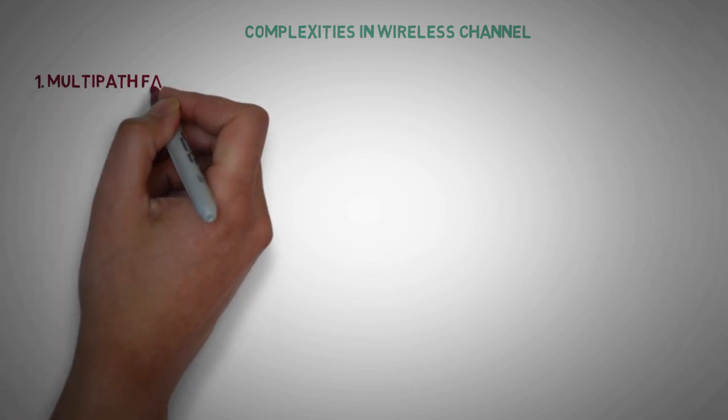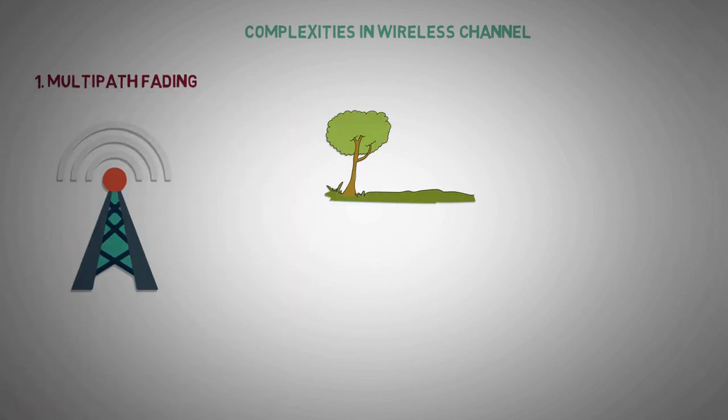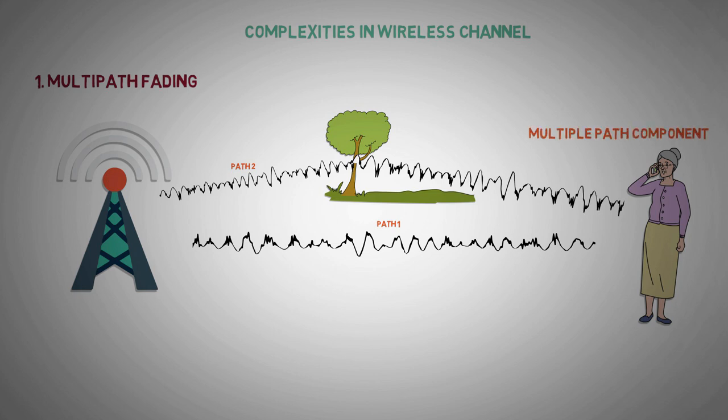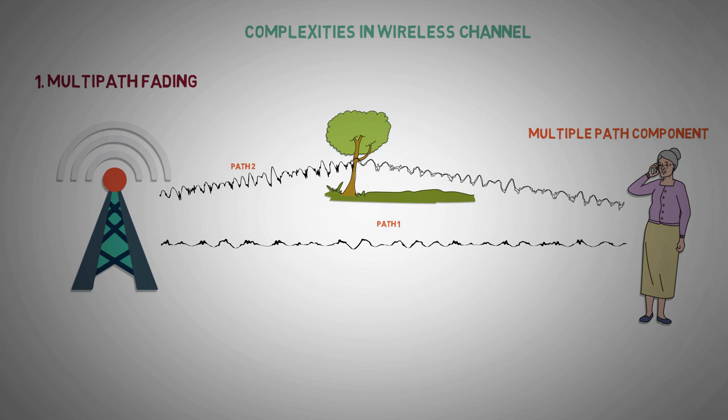Multipath fading. Unlike a wired channel which uses a fixed path, the signals in a wireless channel can reach a user using multiple paths. All these signals known as multipath components may have different channel gain and time delay. This combined effect causes what we know as multipath fading.